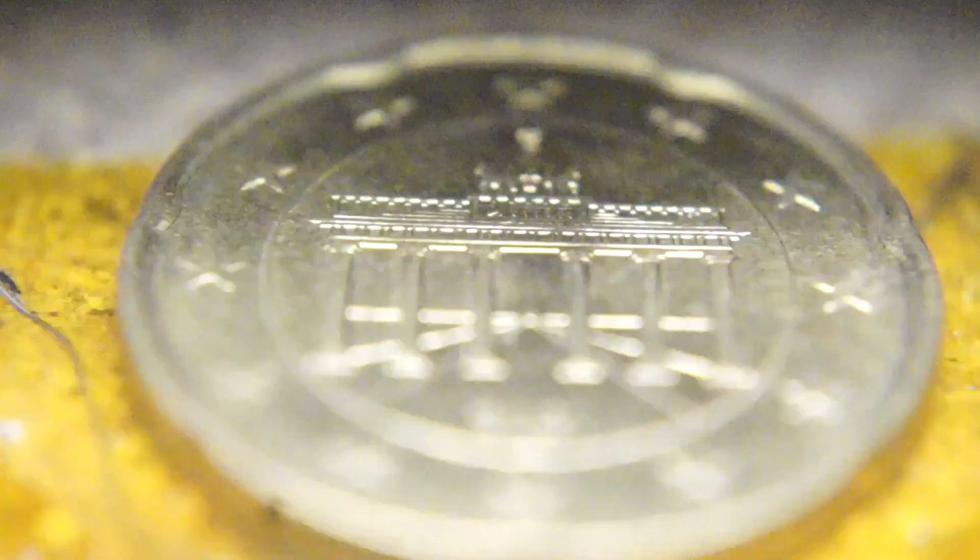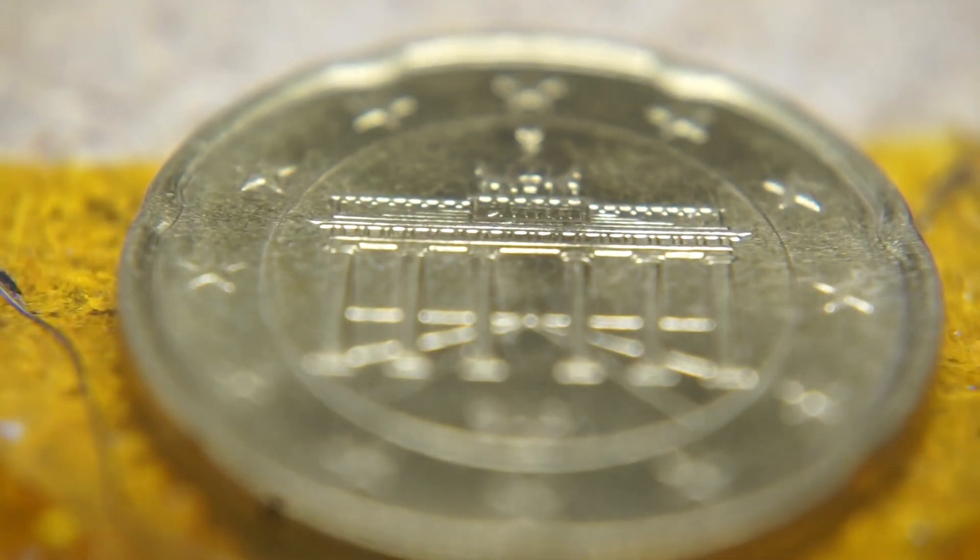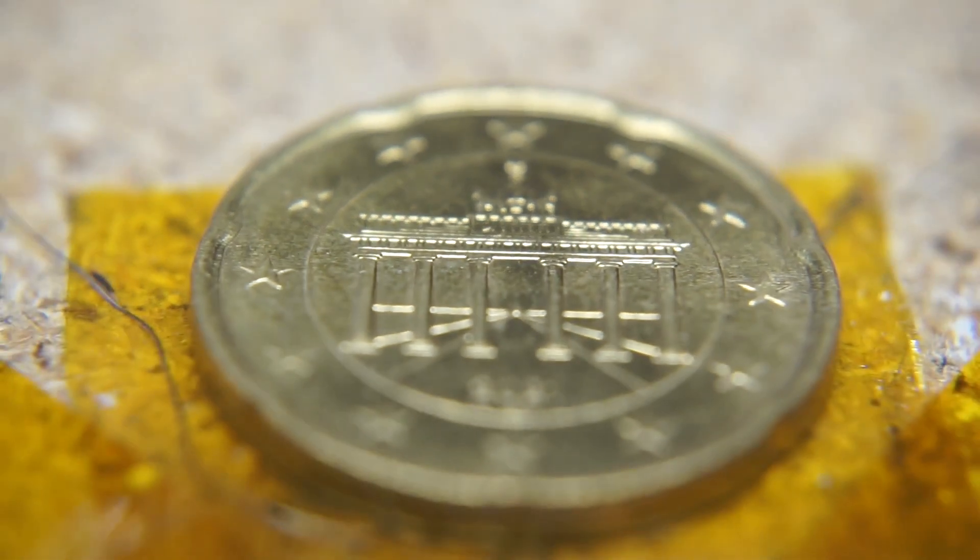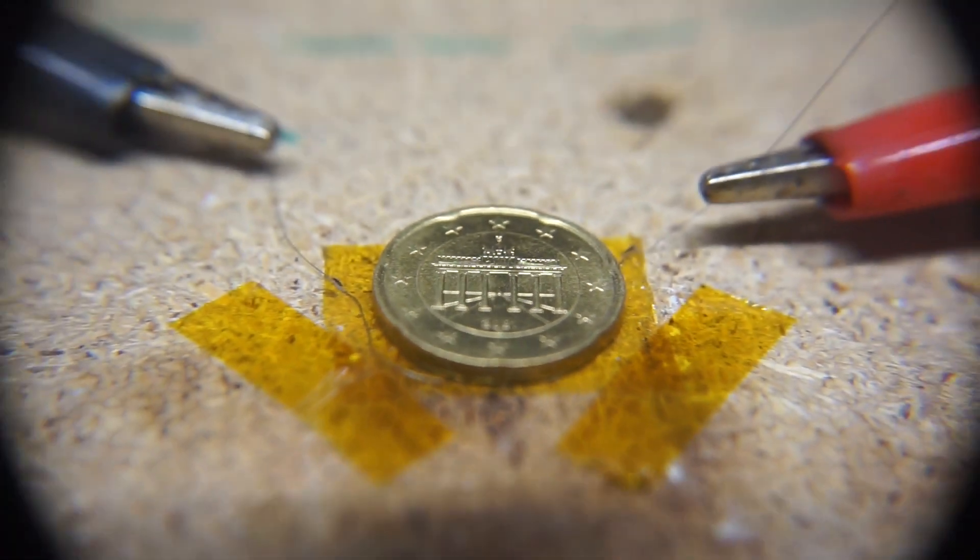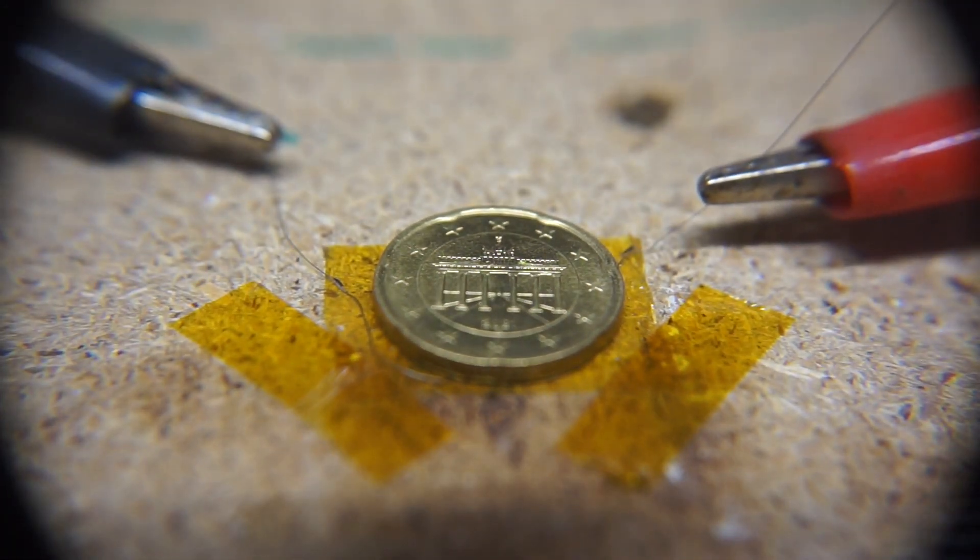But let us turn the light on again. And now go for a little demonstration. Because as you see left and right I have some clamps and some heating wire under the coin.